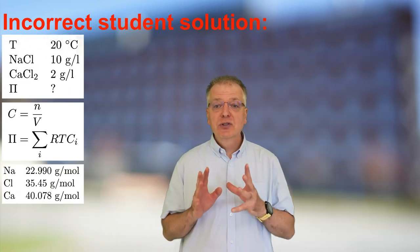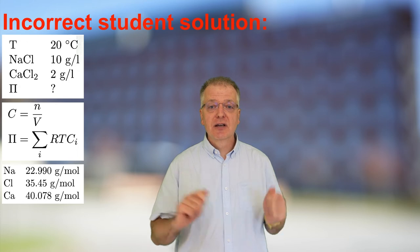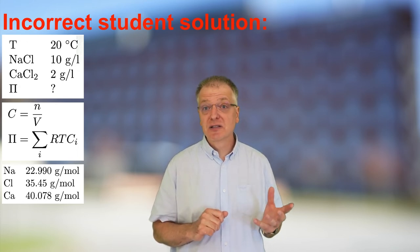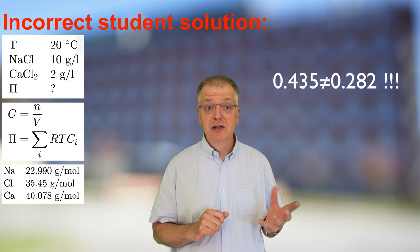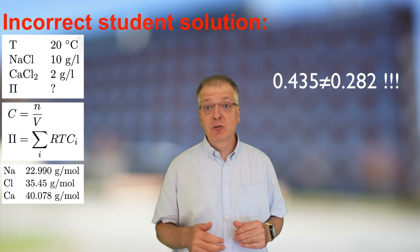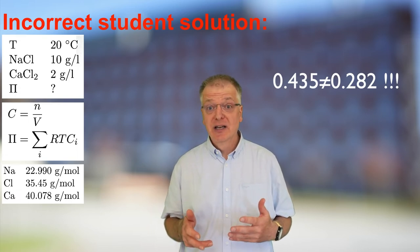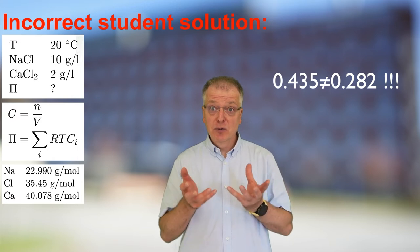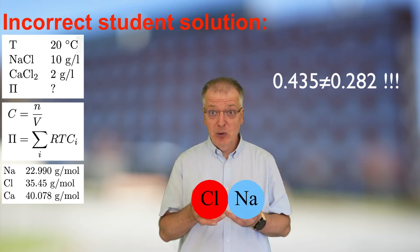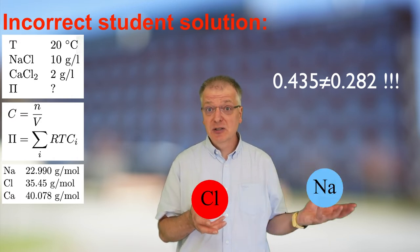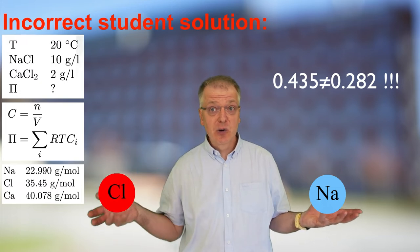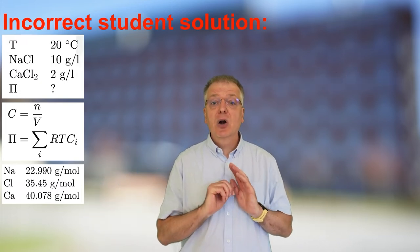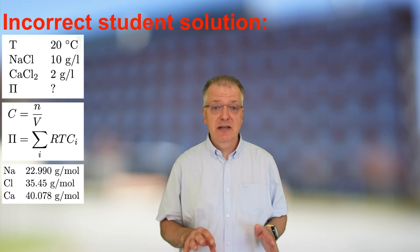Furthermore, you should see the warning flags waving when you get that the concentration of sodium is 0.435 mole per liter while the chloride from dissolving sodium chloride becomes 0.282 mole per liter. If you dissolve sodium chloride in water, you should get just as many sodium ions as chloride ions, right? Thus, our calculation does not make sense.